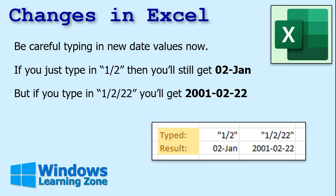But this one had a custom date format in the cell, and it kept it the way it was — it won't change any custom-formatted cells. You do have to be careful entering in new values. If you just type in 1/2, you're going to get January 2nd, just like you're expecting from the old standard. But if you type in 1/2/22, you're going to get this.